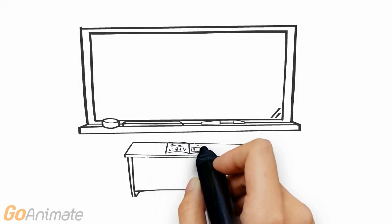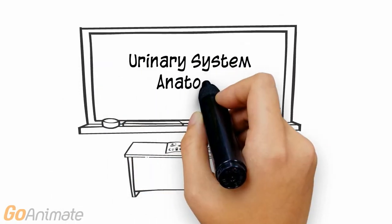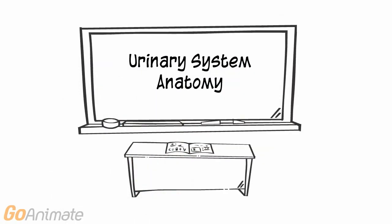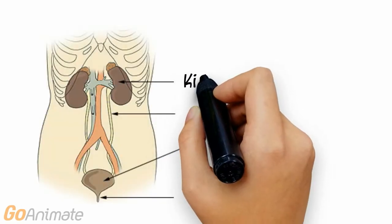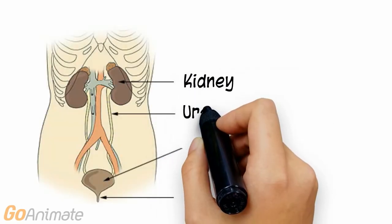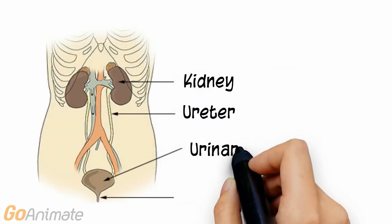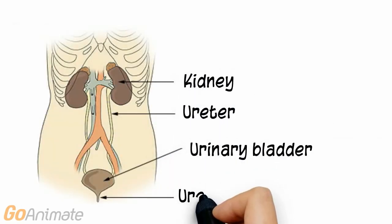Let's learn about the anatomy of the urinary system. The urinary system consists of the kidneys, ureters, urinary bladder, and urethra.